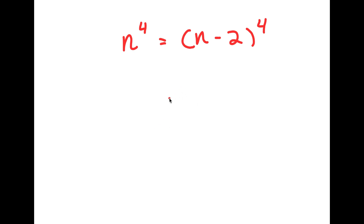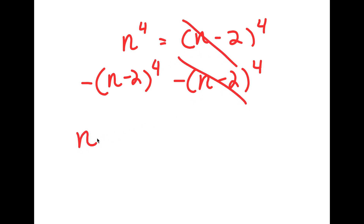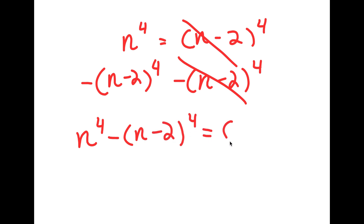So in this problem, I have n to the power of 4 is equal to n minus 2 to the power of 4. To solve this, I'm going to first start by subtracting n minus 2 to the power of 4 on both sides. These two cancel out, and I'll be left with n to the power of 4 minus n minus 2 to the power of 4 is equal to 0.